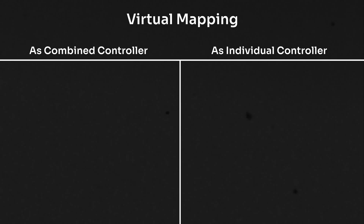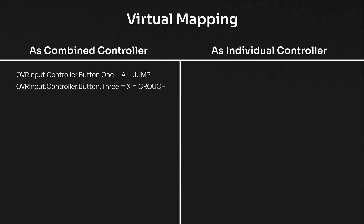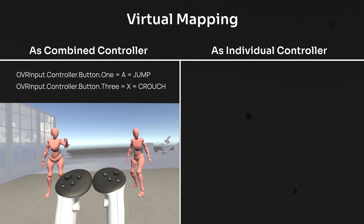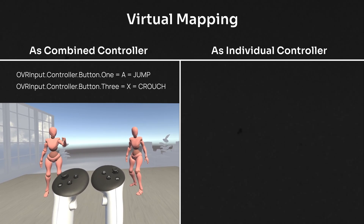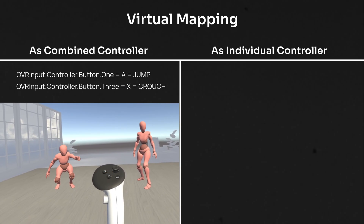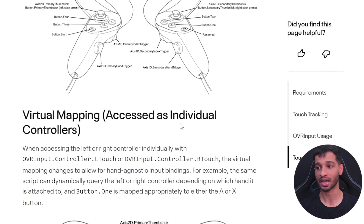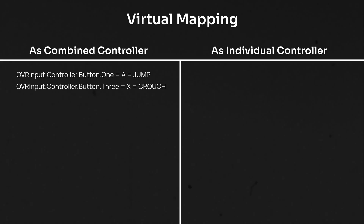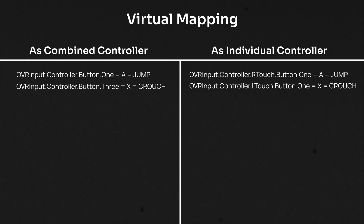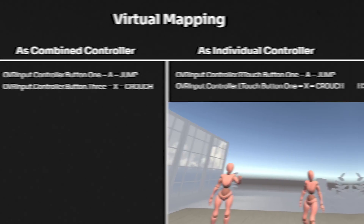Let me explain with an example. Consider that you map button A for jumping and button X for crouching. This works as expected with combined controller access — until you put your left controller down. The left controller is the primary and right is the secondary, so once you put it down the right controller becomes primary. Now pressing A will crouch instead of jump. This is solved by using individual controllers, where you assign left touch or right touch specifically — so even if you put your left controller down and press A, it still jumps.